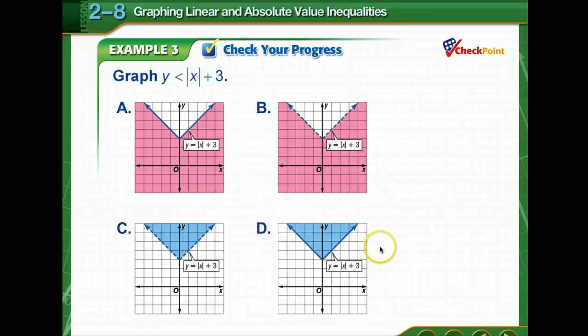Okay, time for you to check your progress. Graph y is less than the absolute value of x plus 3. So take just a moment. Okay, first of all, I know that I don't have to do all the work for the xy table because it looks like every one of these boundaries is the same. Now, is it going to be dashed or solid? Yes, it's going to be a dashed boundary. So we know we're looking at either b or c. So all we have to do now is test (0, 0) to see which one is going to work.